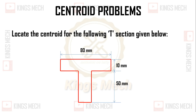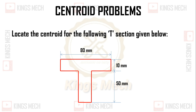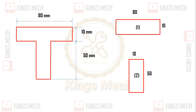So, get back to the video now. We need to locate the centroid of the T-section shown below. The centroid problem is already solved in the playlist. Here it is a moment of inertia problem, and first we have to find the value of the centroid.